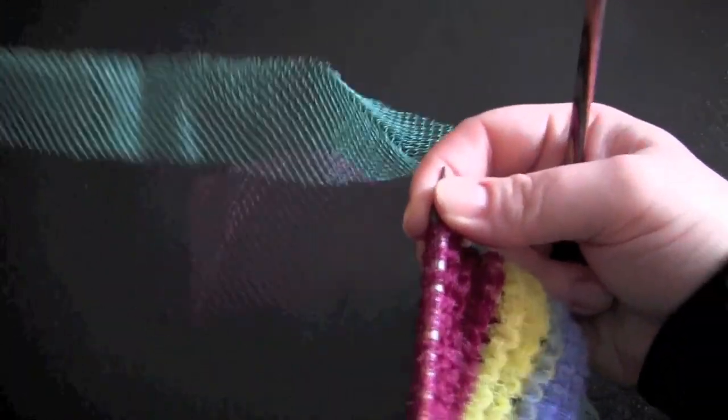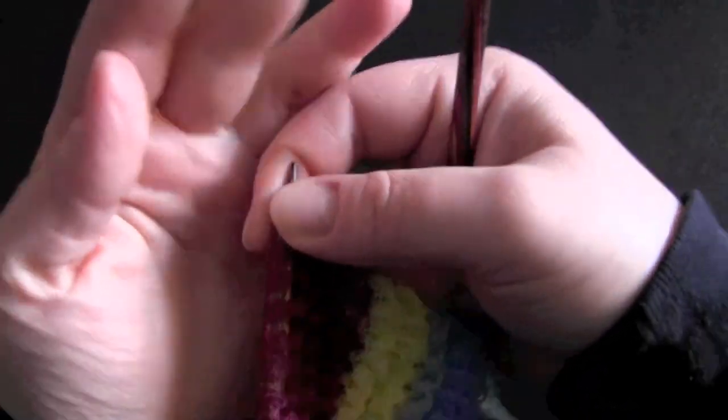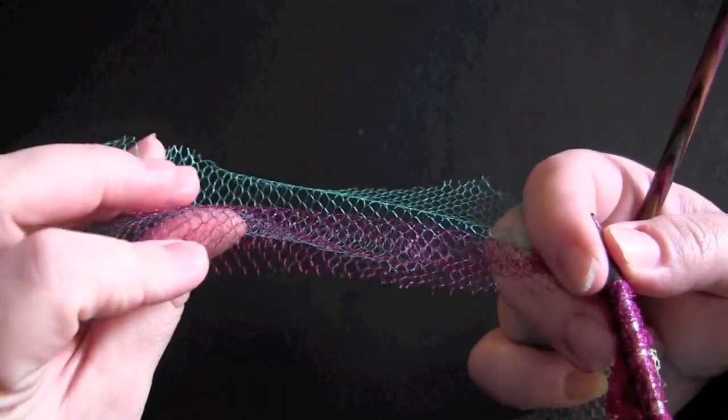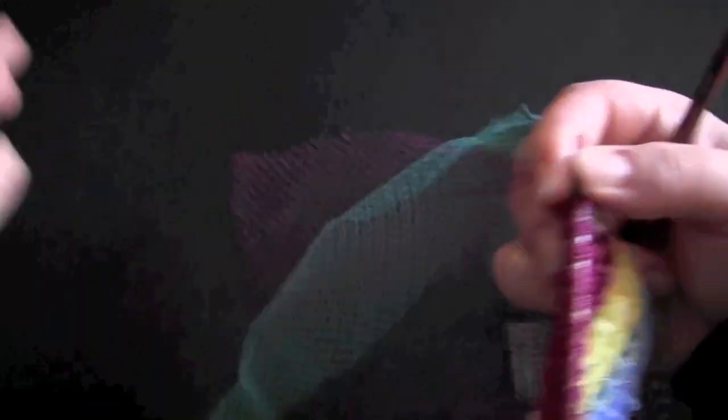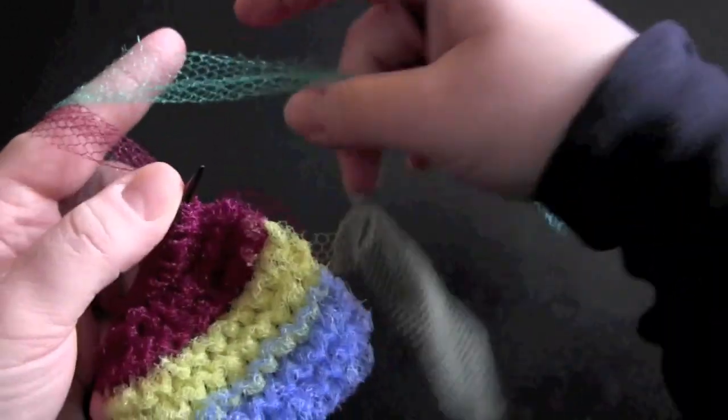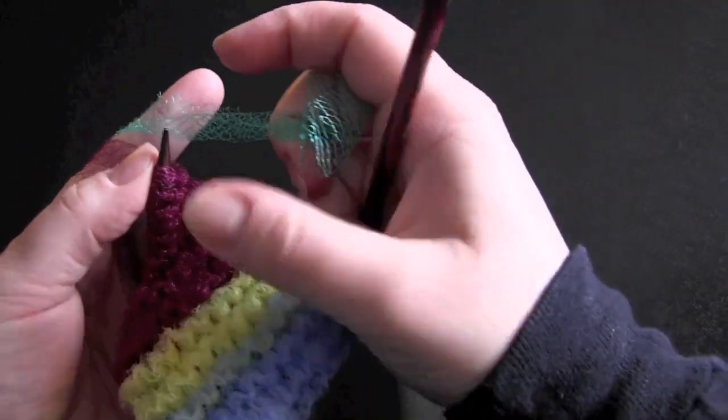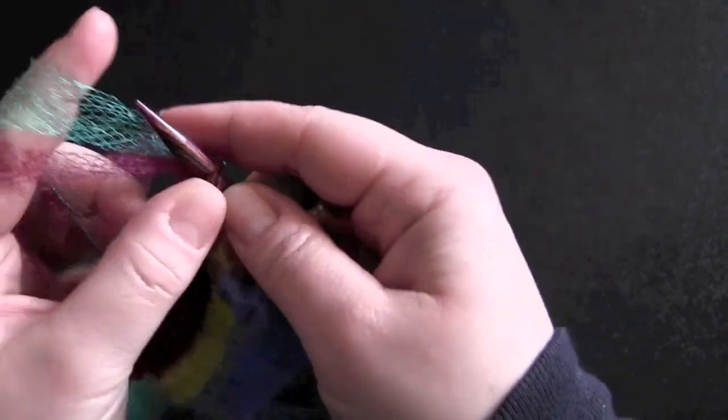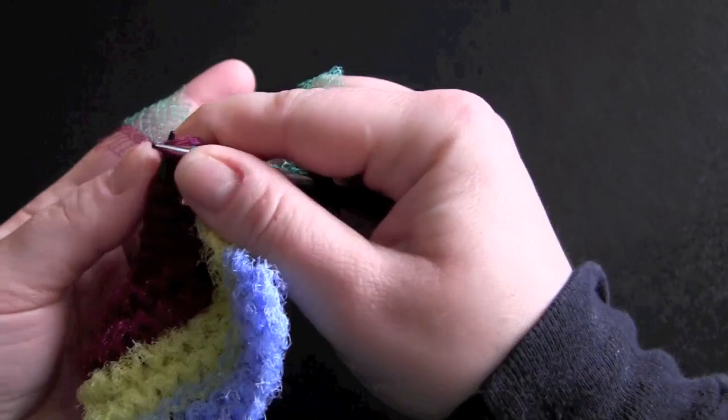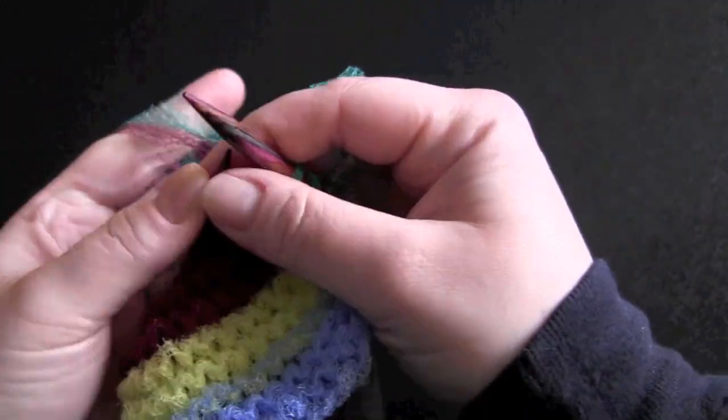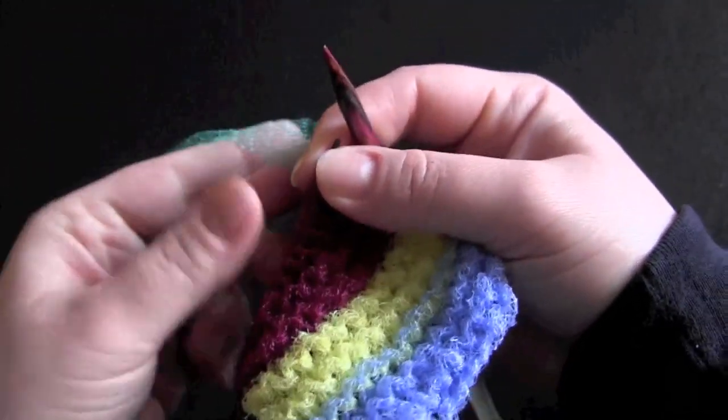Okay, time for my last strip here, my green. Again, I'm holding the last little bit of my red strip with my new strip of mesh here and just going to knit the first couple of stitches with both of those held together, and then continue on with my green.